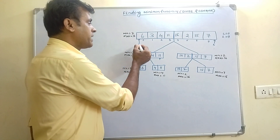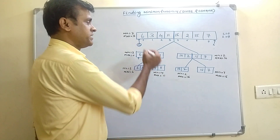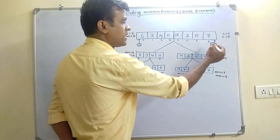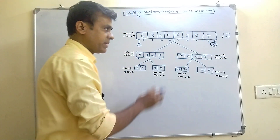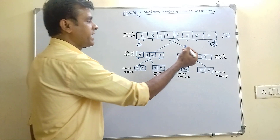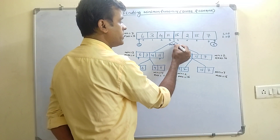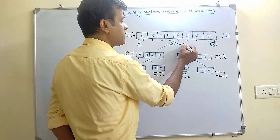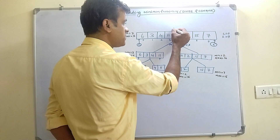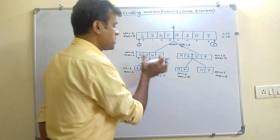I will take my lowest element as the starting index, that is 0, and the highest element as the n minus 1 element, that is 7 in this array. So what I will do is find out a mid. Mid is equal to 0 plus 7 divided by 2, which is equal to 3. So I have divided this array into 2 parts.